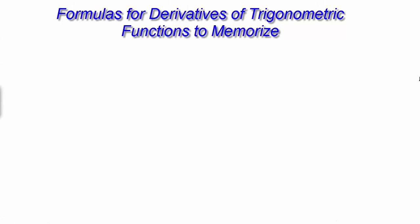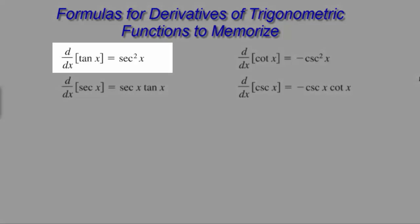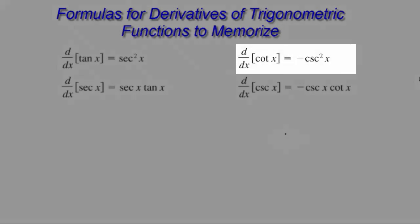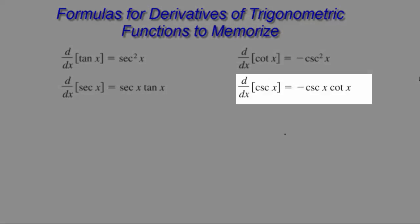So these are the four new derivatives for trig functions that we see in our textbook. Derivative of tangent is secant squared x. Derivative of secant is secant x tangent x. Derivative cotangent is negative cosecant squared x. Derivative of cosecant is negative cosecant cotangent.